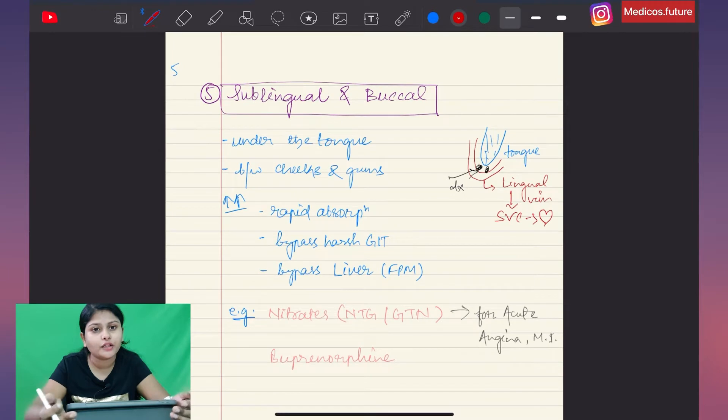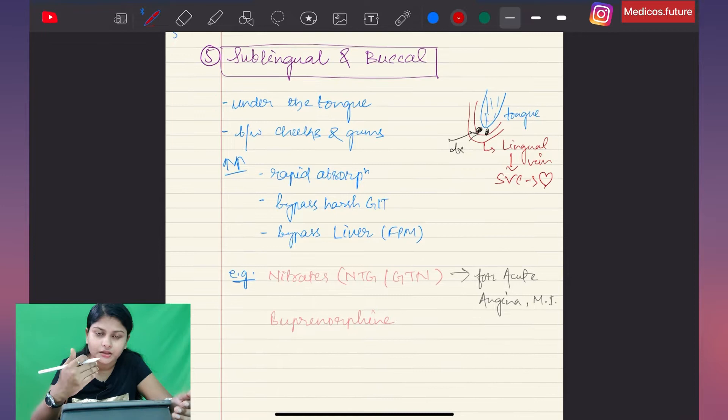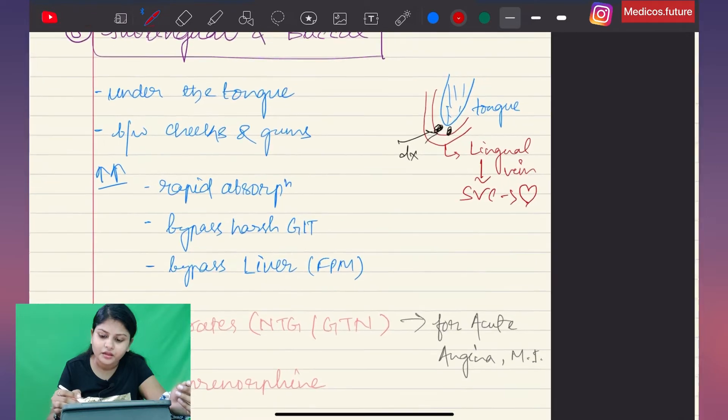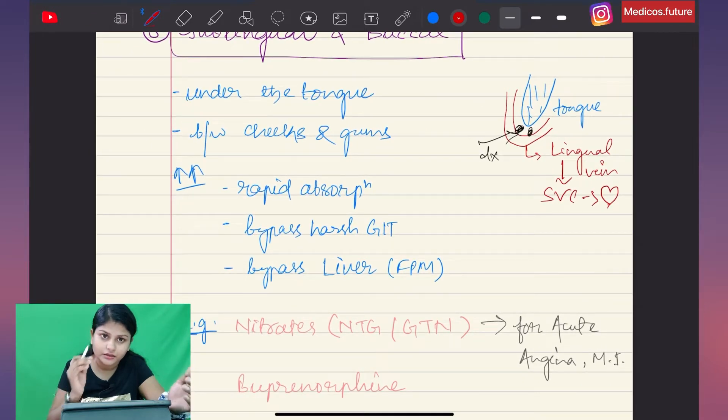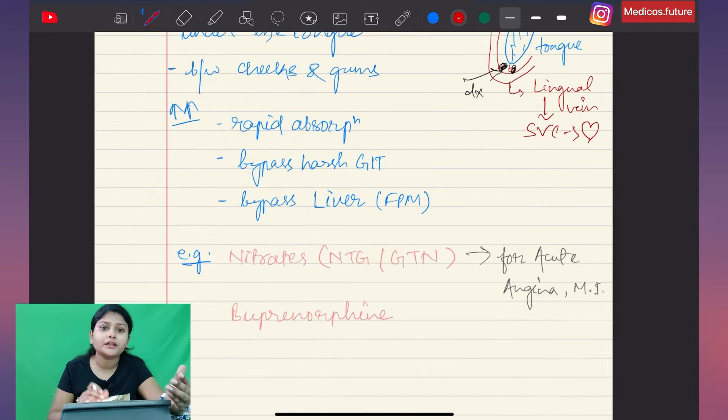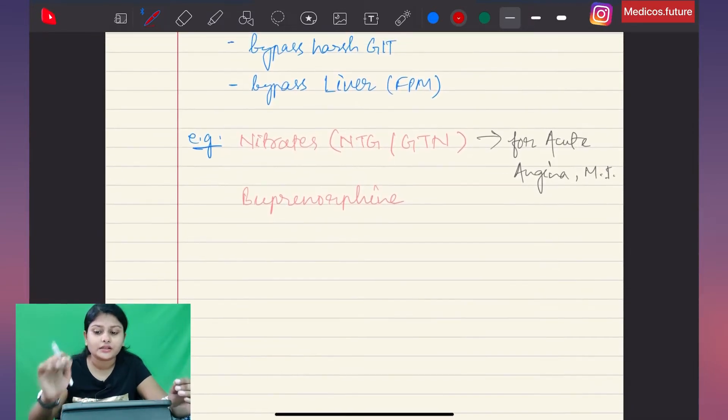Then we have sublingual and buccal routes of administration. Sublingual is under the tongue, and the buccal route means between the cheeks and the gums. We place drugs under the tongue so it will be absorbed in the tongue and then to the heart, bypassing the GI tract and liver.